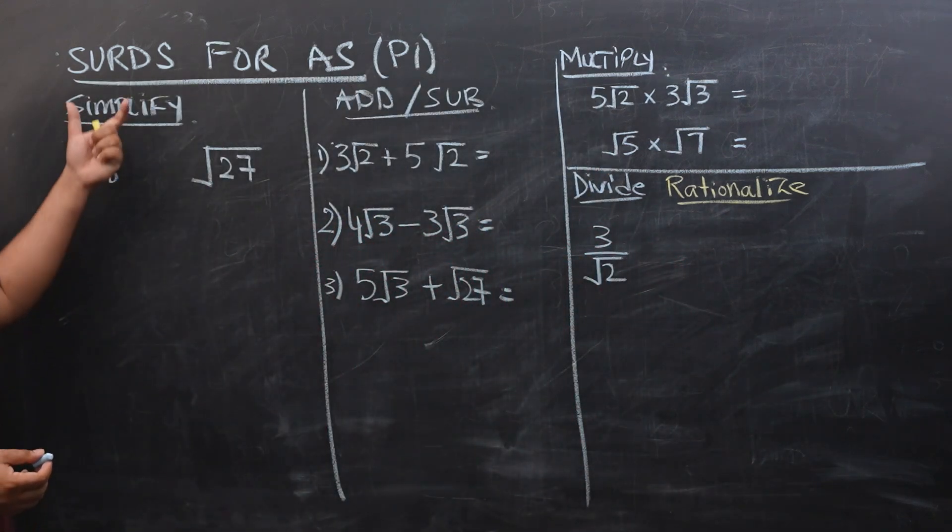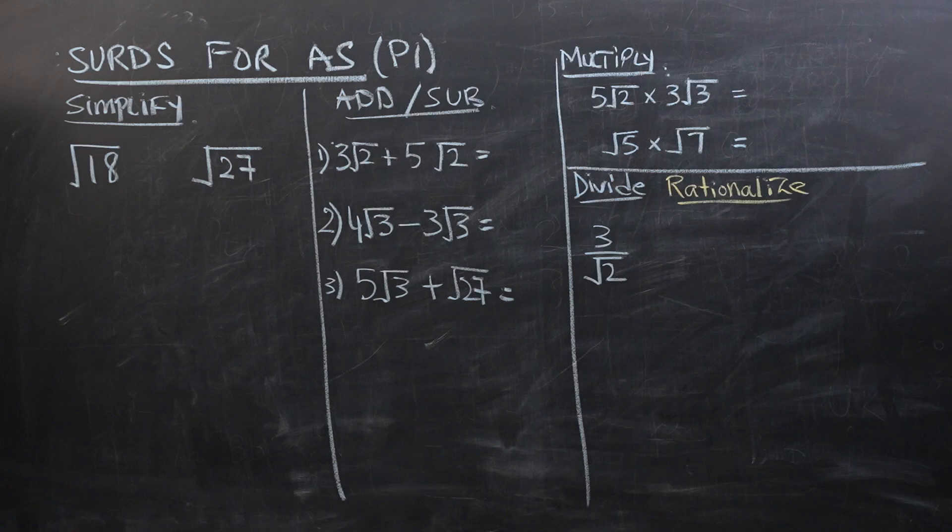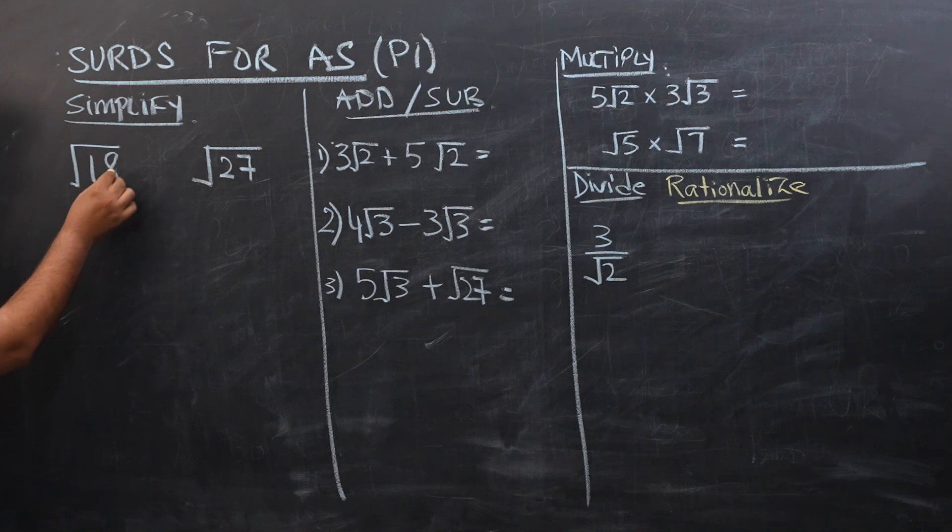What are surds? Surds are basically square roots, and there are only four functions that we need to know about square roots. The first one is how to simplify. We're going to quickly cover them, and the first portion is simplify. When we're simplifying surds, we have to see what this number is made up of.